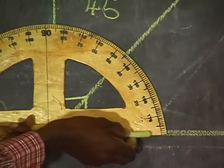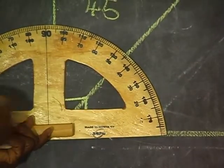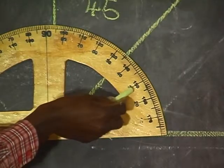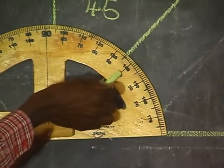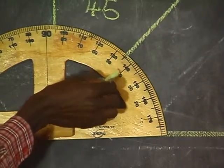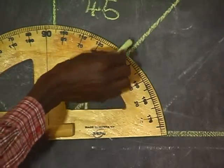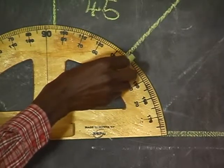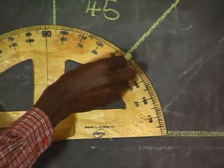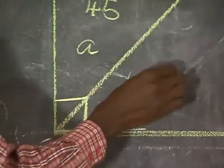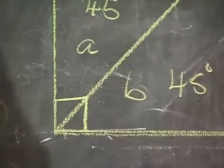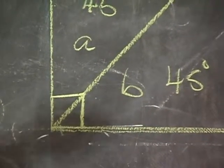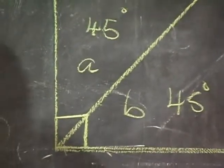The scale is marked at intervals of 10, so from 0 we go to 10 degrees, 20 degrees, 30 degrees, 40 degrees. Then the line passes between 40 and 50. We want to know at what point: 41, 42, 43, 44, 45. So I can see that the size of angle A and angle B are the same, since each of them is 45 degrees.